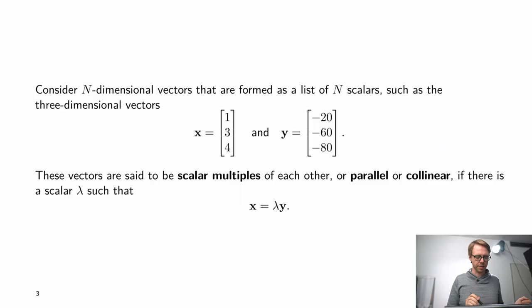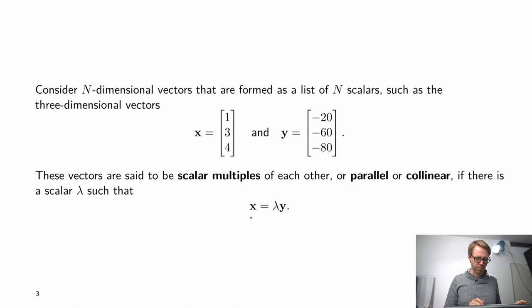Consider the case where we have two vectors x and y, and these two vectors are scalar multiples of each other. In this case, we call these two vectors parallel or collinear. For example, if we have x equals (1, 3, 4) and y equals (-20, -60, -80), then we can write x equals lambda times y for some scalar lambda — in this case, minus 1 over 20. So if we can write two vectors like this, we call them parallel or collinear.